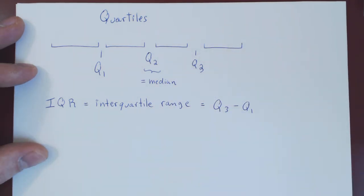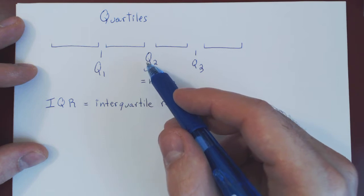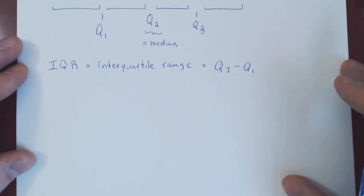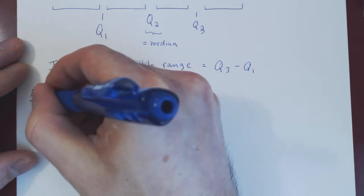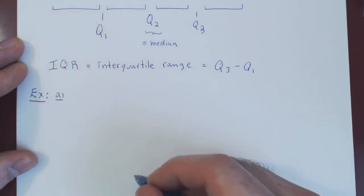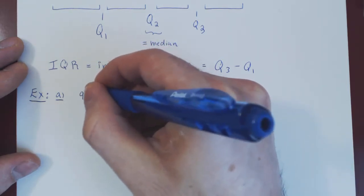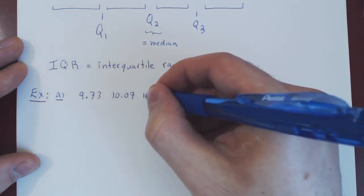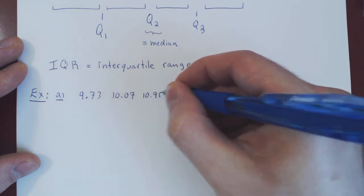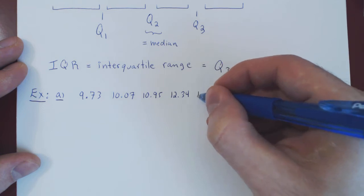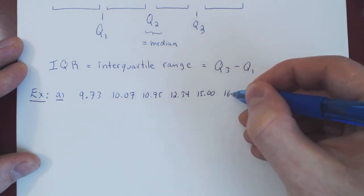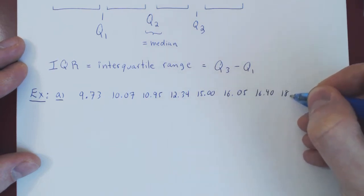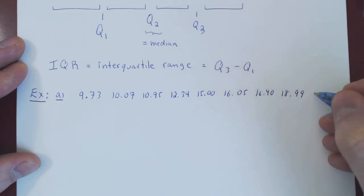Now let's consider two examples, because there may be a subtlety depending on whether you have an odd or even number of values. In the first example, suppose we have gathered the following values: 9.73, 10.07, 10.95, 12.34, 15, 16.05, 16.40, 18.99, and 19.25. Each value could be, say, the price of a meal at a fairly cheap restaurant.